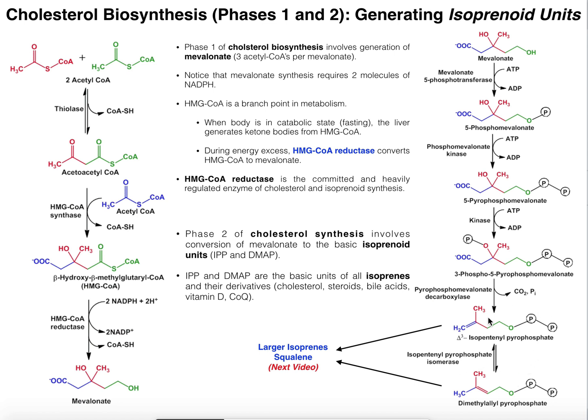In humans, heme A — which is an isoprenylated form of heme — actually requires these isoprenoid units in a different form, which we'll eventually talk about.